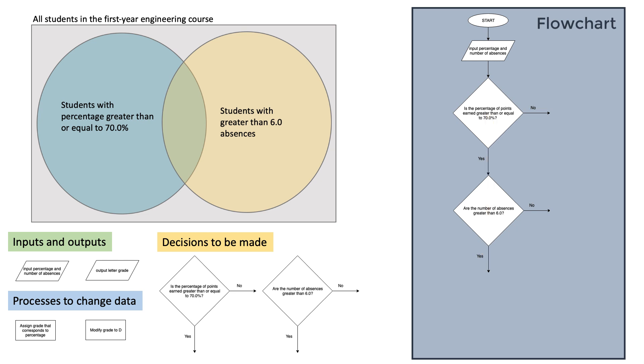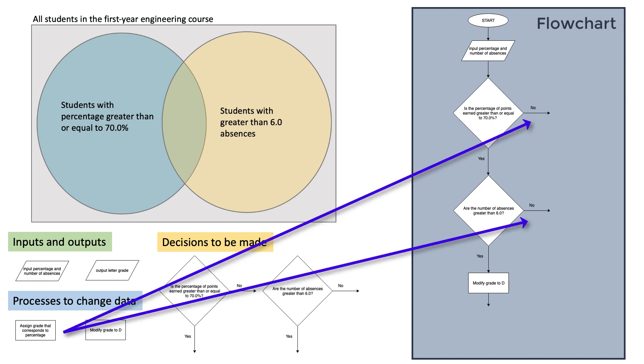That path is the one where we need to modify the grade, so I'll add the modify grade to D rectangle here. And when either decision has a no answer, we will assign the letter grade that corresponds to the percentage.